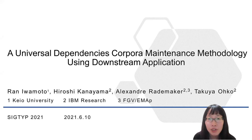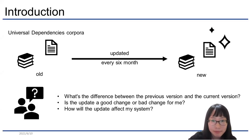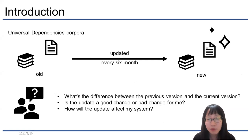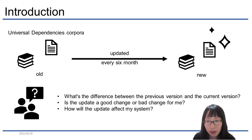Hi, I'm Lan. I will talk about Universal Dependencies Corpus and Maintenance Methodology using downstream applications. In a dataset where a corpus is updated, most people think about the difference between the previous version and the current version. Is the update a good change or a bad change for me? And how will the update affect my system? I work to clarify those questions about UD.